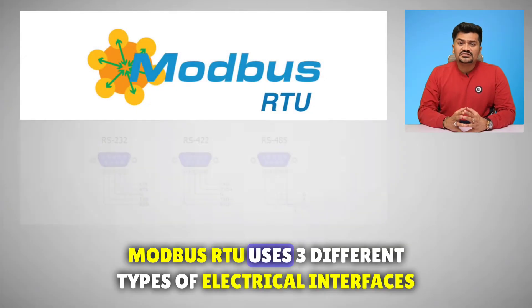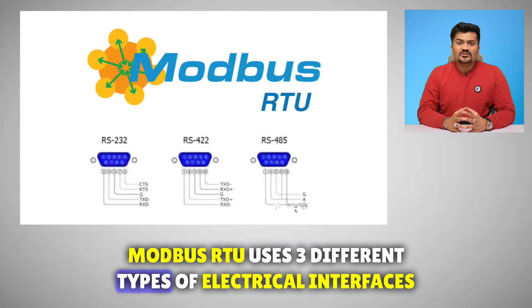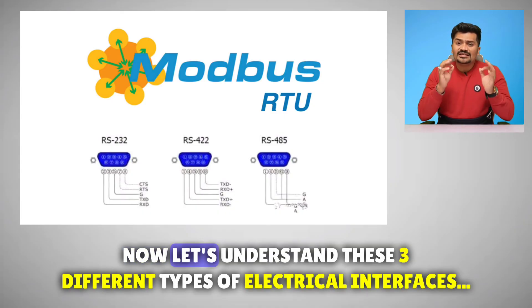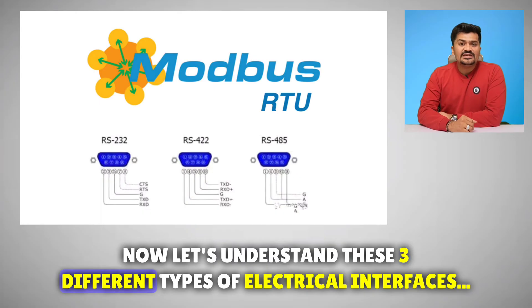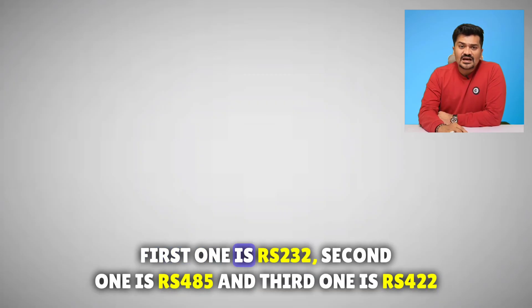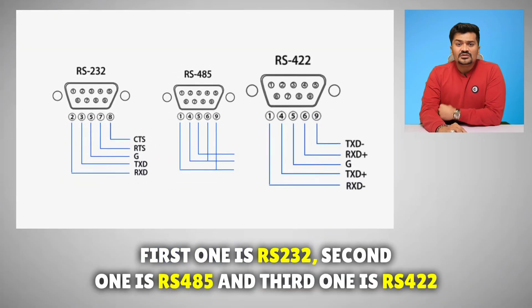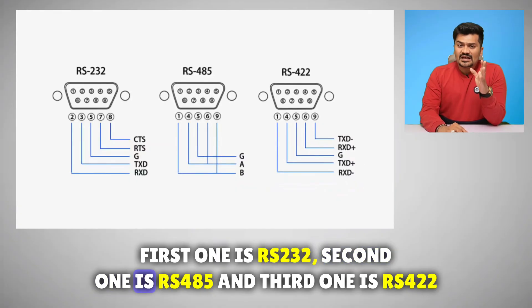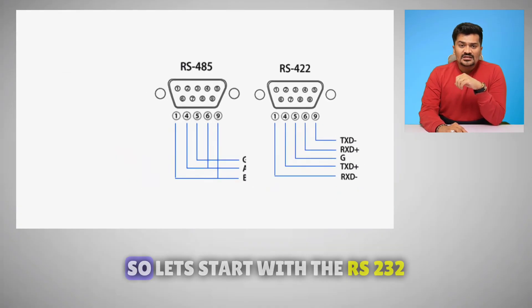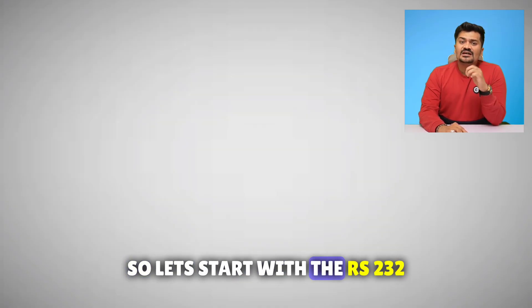Modbus RTU uses three different types of electrical interfaces for serial communication. These three types are: RS-232, RS-485, and RS-422.